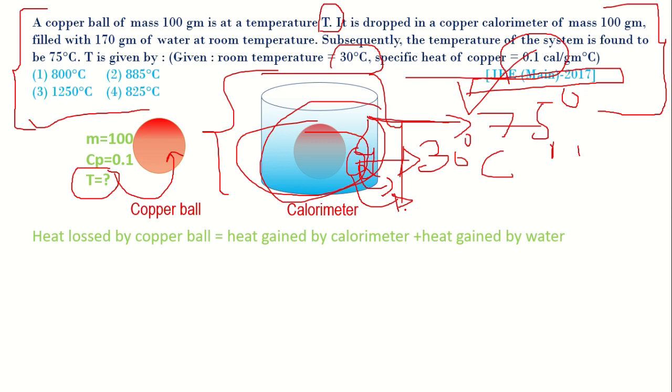If you say how can you say that the temperature of the ball is higher than the temperature of water, in the question there is a hint for that. The temperature of the system is found to be 75 degrees Celsius, which means that the temperature of the system is increased.